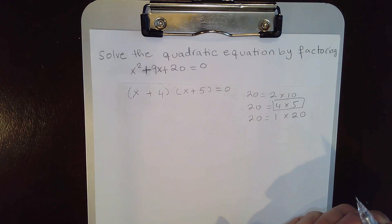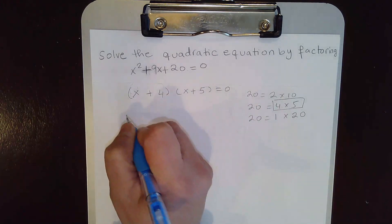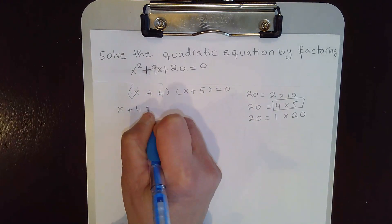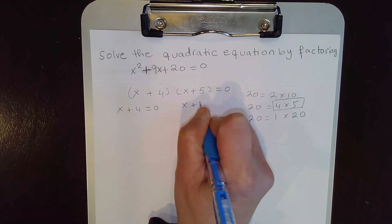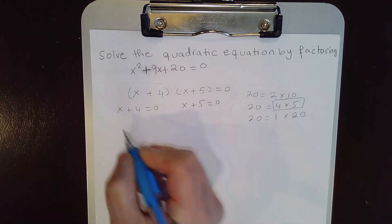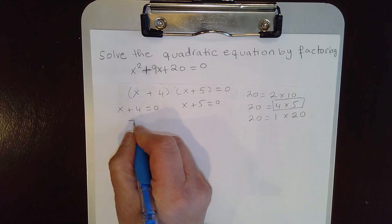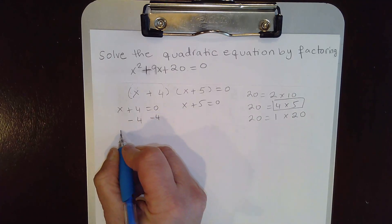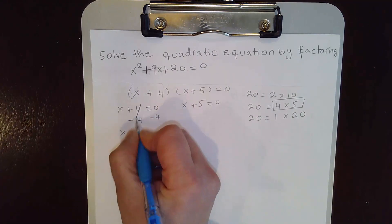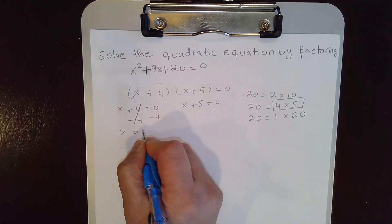Now we need to solve the equation, so we set each factor equal to 0 and solve for x. Here, to solve for x, we subtract 4 on both sides of the equation. We get x equals negative 4.